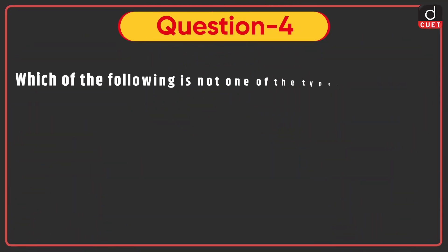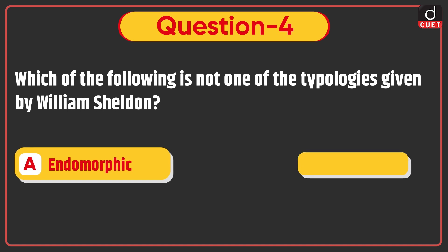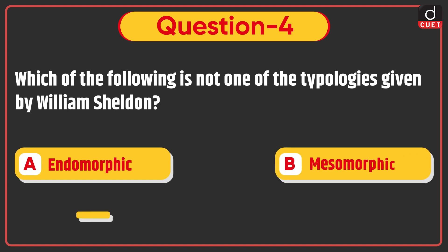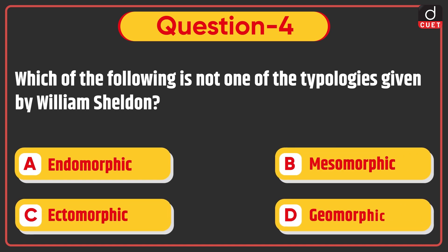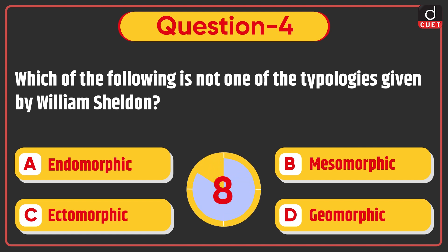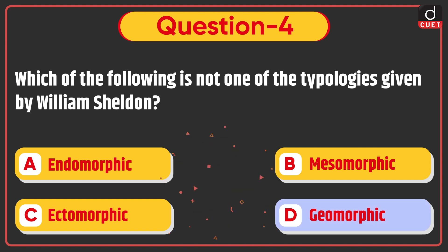Next question: which of the following is not one of the typologies given by William Sheldon — endomorphic, mesomorphic, ectomorphic, or geomorphic? The correct answer is option D: geomorphic.